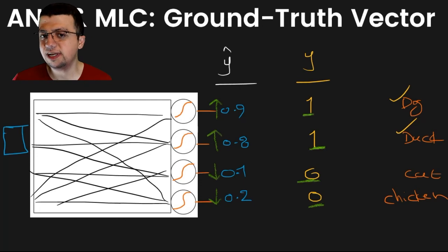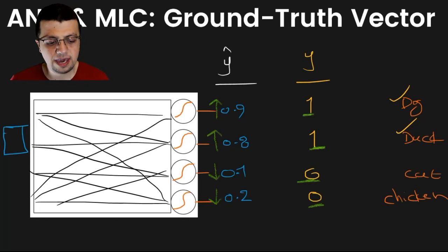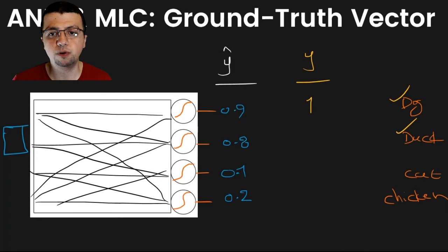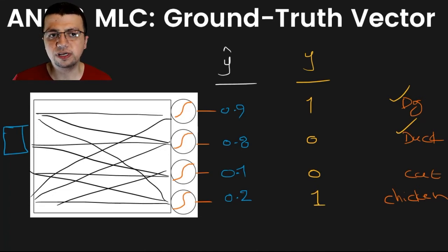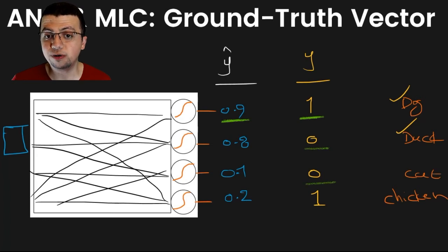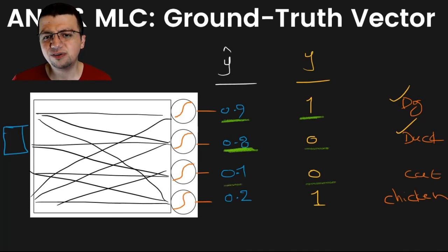This means you want the network to increase the output of the first and second neurons as much as possible, and decrease the values of the third and fourth outputs as close to 0 as possible. In this case, you can see the network is doing a pretty good job. But consider a different scenario where your ground truth vector is [1, 0, 0, 1]. The network's output of 0.9 for class 1 is confirmed correct, and 0.1 for class 3 is low enough — close to 0.